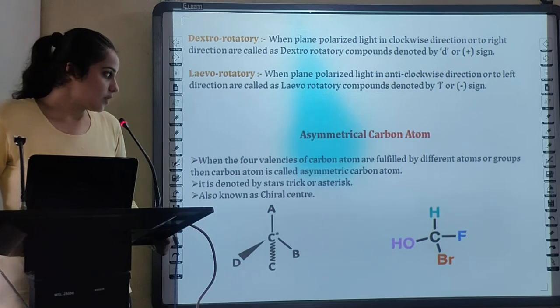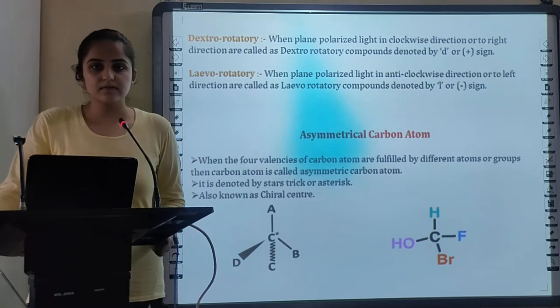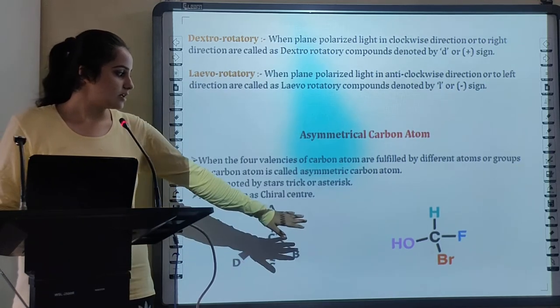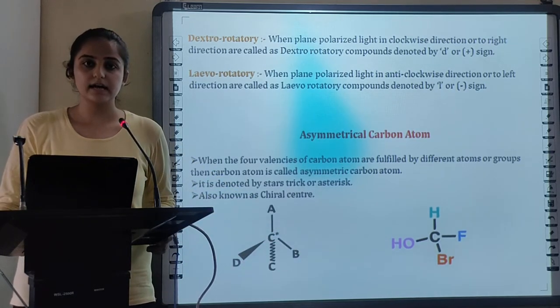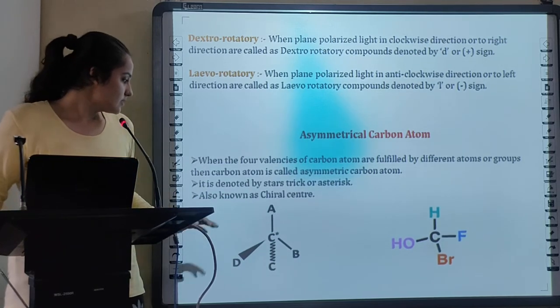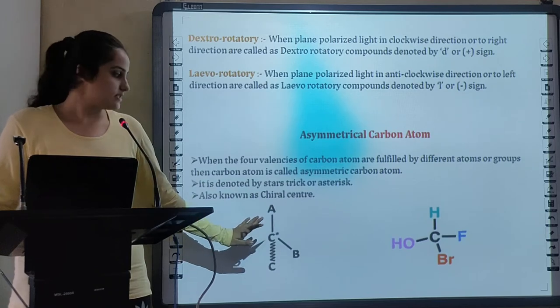Next is very important concept of Asymmetrical Carbon Atom. As we all know that Carbon has 4 valencies and if all the 4 valencies of Carbon Atom are filled with different groups then that Carbon Atom is called as Asymmetrical Carbon Atom. It is denoted by star and also called as Chiral Center.